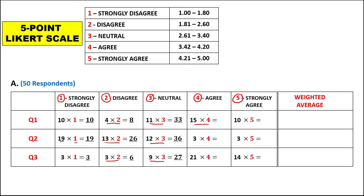Then 15 times 4 is 60; 3 times 4 is 12; 21 times 4 is 84. Then 10 times 5 is 50; 3 times 5 is 15; and 14 times 5 is 70.